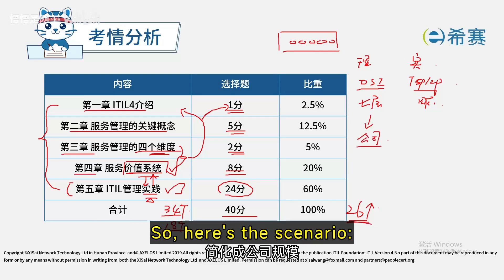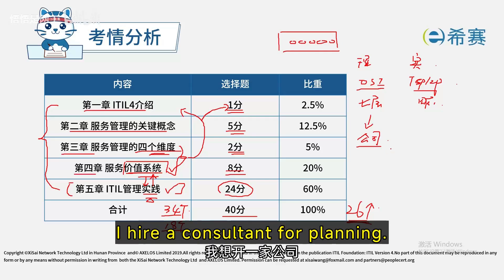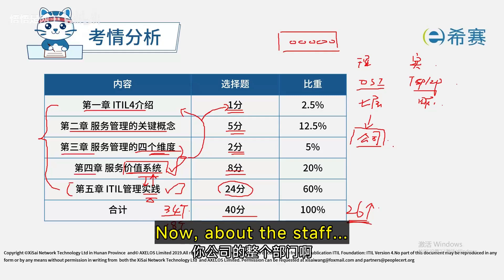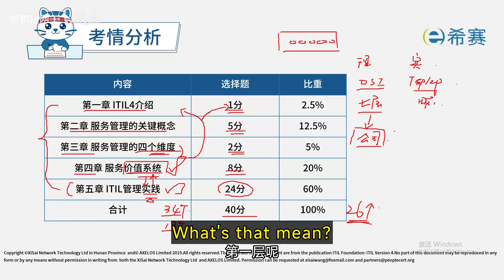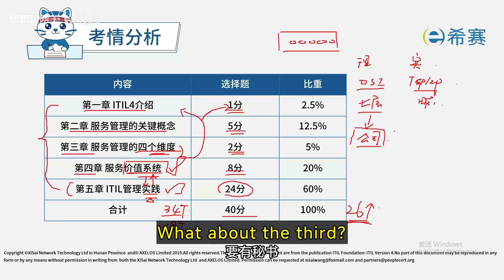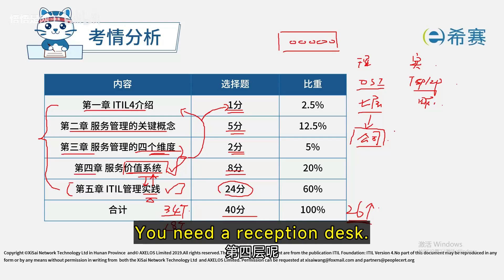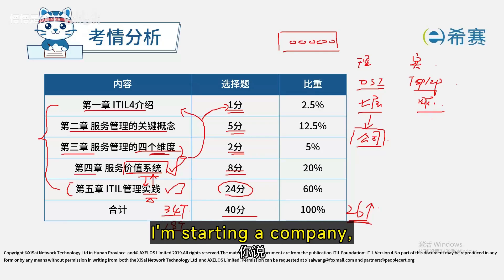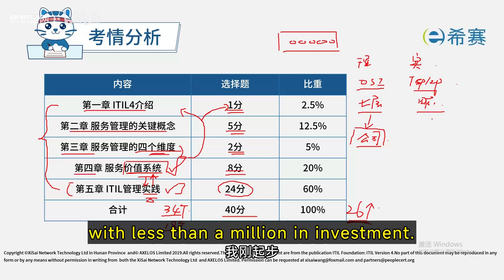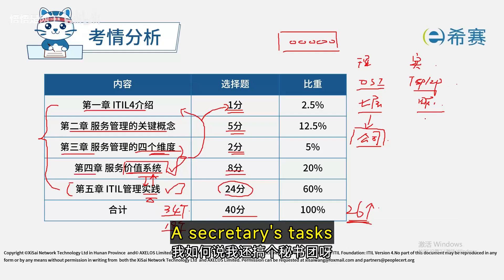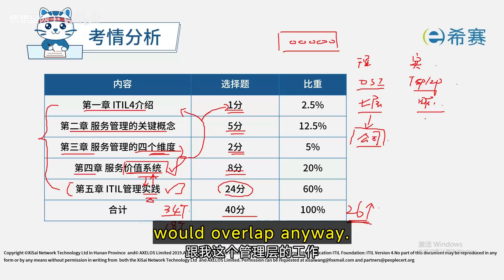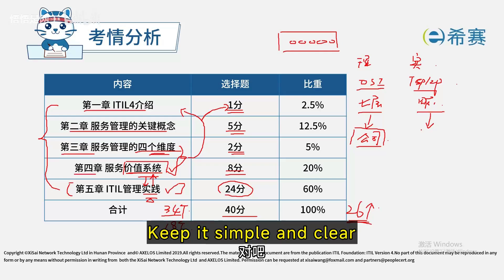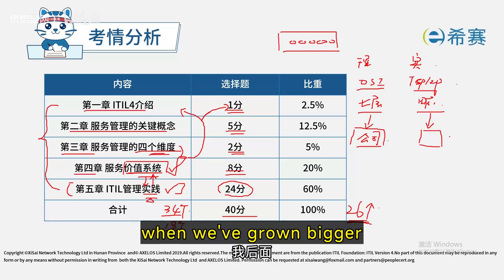To illustrate the difference between theory and practice: imagine starting a company. A consultant tells you that according to the book, your organizational structure should have seven levels — top management, executive assistants, operational departments, reception, logistics, and so on. But if you're just starting out with under a million in investment, why would you need a whole team of secretaries? You make choices — the essentials you can't do without — keeping it simple and straightforward.